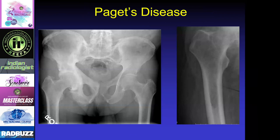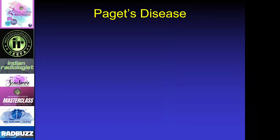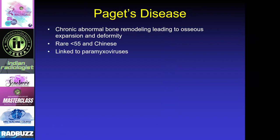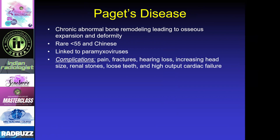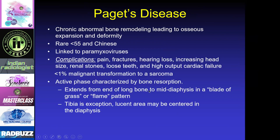Paget's disease can look different depending on the phase. In the chronic phase you see the bone with medullary and cortical expansion. In the lytic phase, which usually begins at one end of the bone and works toward the other, you see the blade of grass or flame shape appearance. Paget's disease is abnormal bone remodeling leading to osseous expansion and deformity — rare in the young and in Chinese populations, and linked to the paramyxovirus. The pelvis is the most common site involved and is often unilateral. One exception is the tibia, where the lucency can begin at the center and work toward the ends.